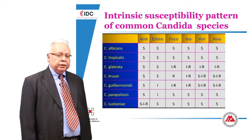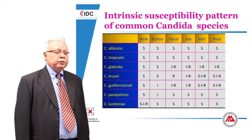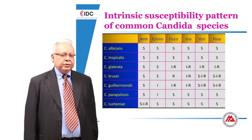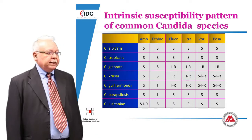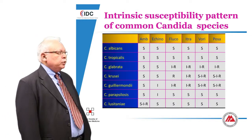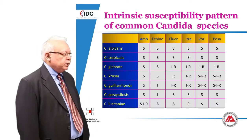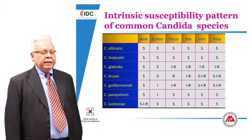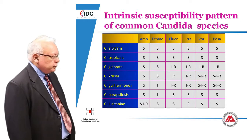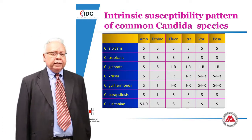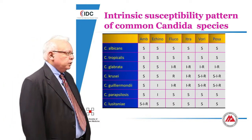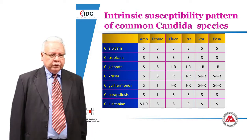It is very important to know the sensitivities of the different Candida species to different azoles and other antifungal agents. As you can see, Candida tropicalis and Candida albicans, which are most common in our country, are usually sensitive to almost all the azoles, echinocandins, and amphotericin B, though the MICs of fluconazole are gradually increasing to albicans and tropicalis. Candida glabrata and krusei on the other hand are getting increasingly resistant to fluconazole and itraconazole, though they are still sensitive to voriconazole.